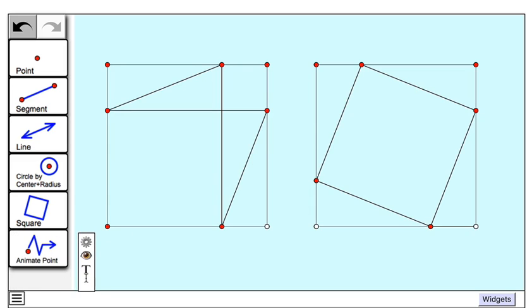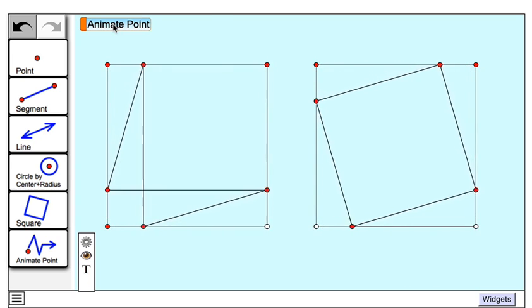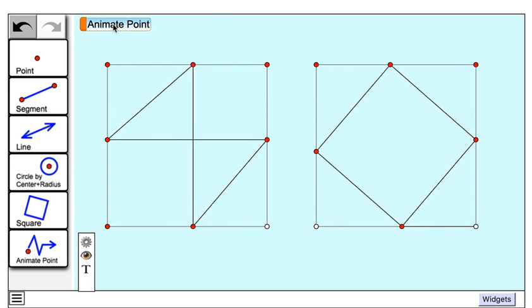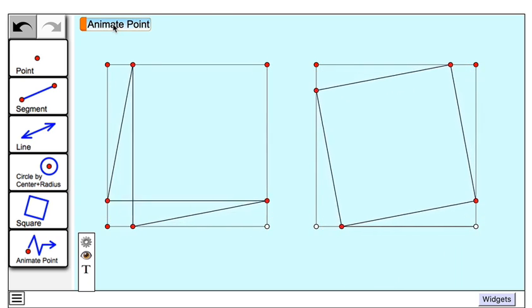I can also use the animate point tool to make this animated. When I tap on that, I get a preview of a point that will animate when I press the animate point button. And what point is it I want to animate? It's this one right here. So I'll tap on it to merge those two points together. And now I can tap on one animated point. And I can stop it and resume the animation.